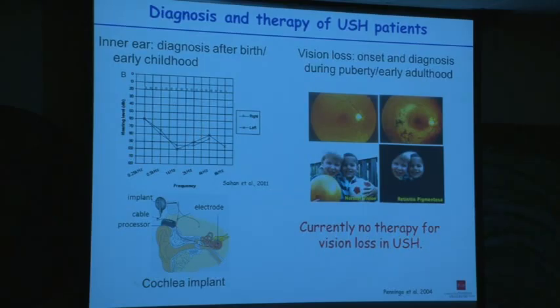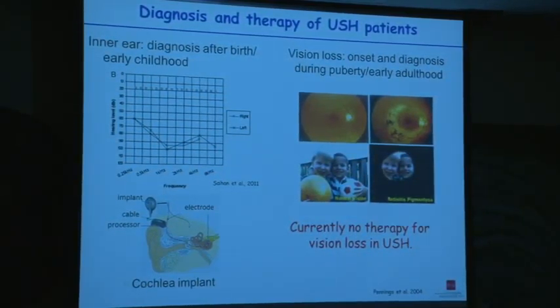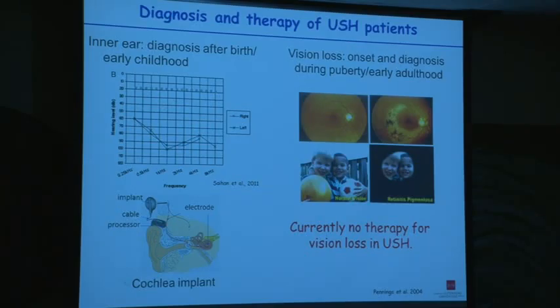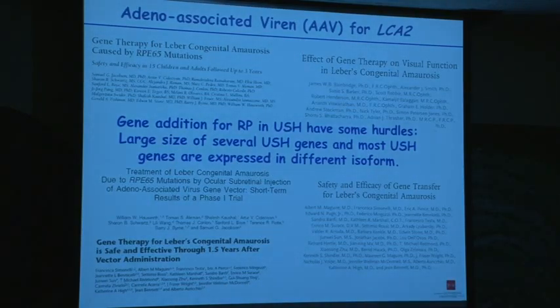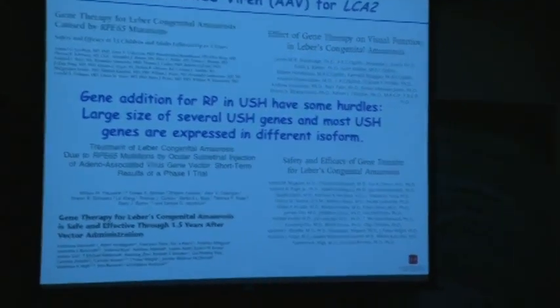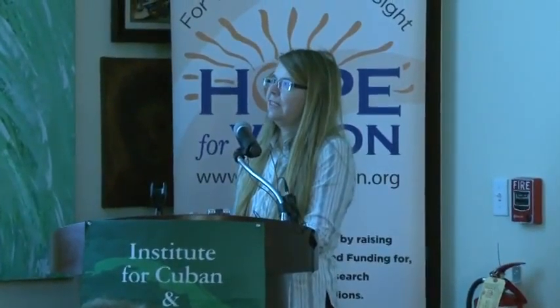If one of these components is missing, you get degeneration of the inner ear leading to deafness or degeneration of photoreceptor cells leading to vision loss. Due to newborn deaf screening, inner ear defects are diagnosed early and hearing deficits can be compensated with hearing aids or cochlear implants. In contrast, vision loss starts during puberty, often with night blindness. As with most retinal degenerations, there's currently no treatment for the vision loss in Usher. Since it's an autosomal recessive disorder, re-expression of the protein might stop retinal degeneration, but some genes are too large to be packaged into viruses.